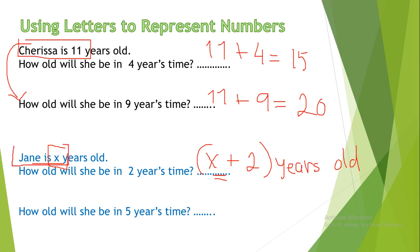Jane is X years old. How old will she be in 5 years time? So, the answer would be X plus 5. Don't forget to put the bracket and write its units: X plus 5 years old.